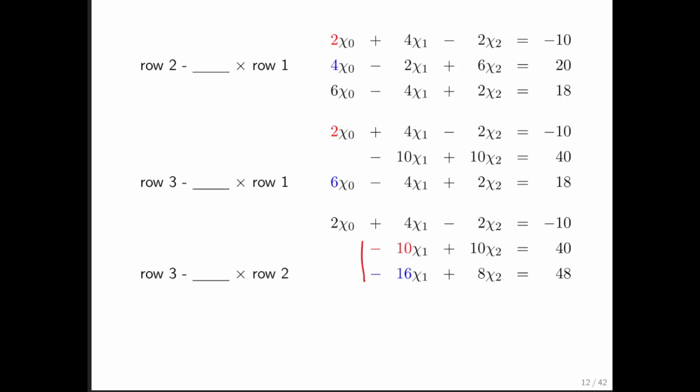And now you recognize that we have a smaller system with two equations and two unknowns sitting right here. And if we take a multiple of the second row and subtract it off of the third row, then we can eliminate this term right here. And what we need to do is we need to multiply 1.6 times the second row and subtract it off of the third row in order to eliminate the desired term, or rather the undesired term. And what you get then is this upper triangular system.